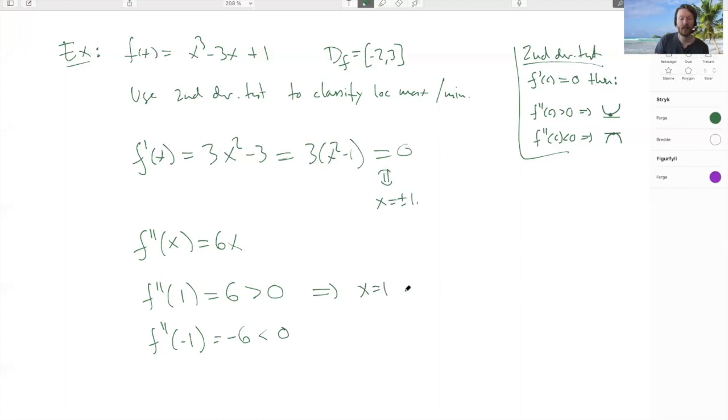This implies that x = 1 is what? It's a local minimum. And this implies that x = -1 is a local maximum.